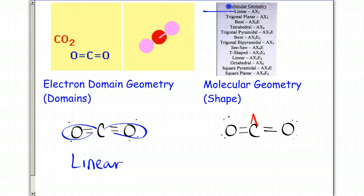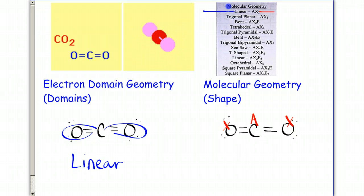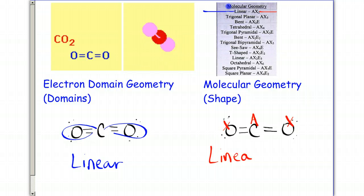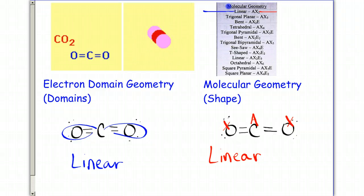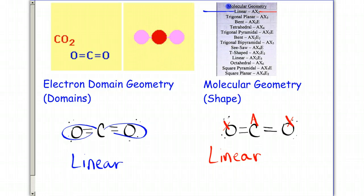For the molecular geometry, we have A for the center and X for the bonded atoms, so this is AX2, which makes the molecular geometry the same as well. There are no lone pairs on the center atom, and if that's the case, then your electron domain geometry and molecular geometry will always end up being the same thing.